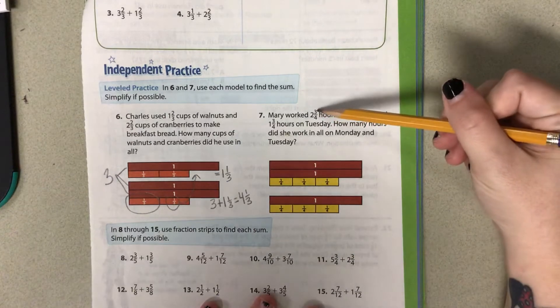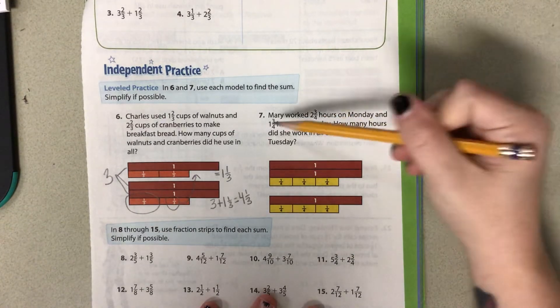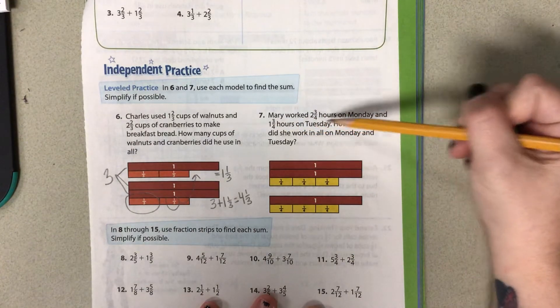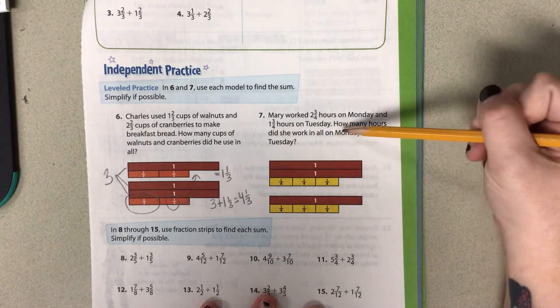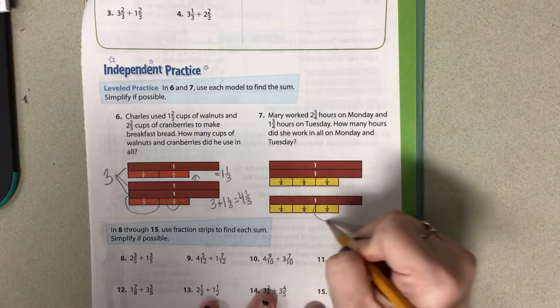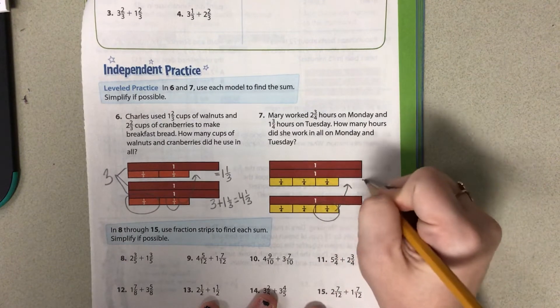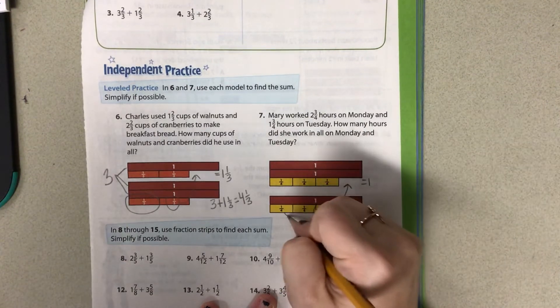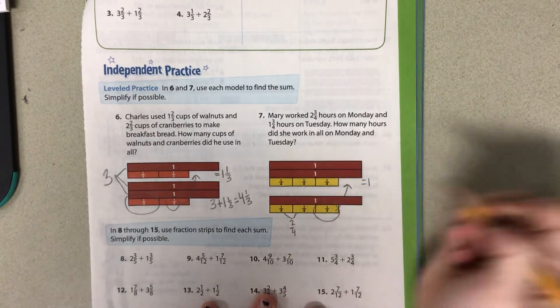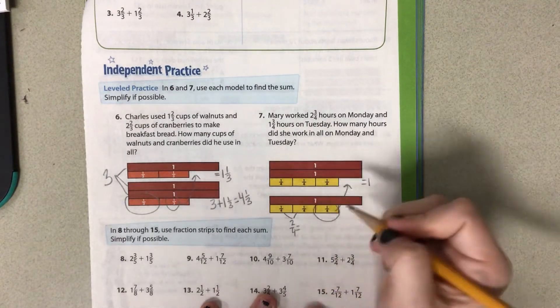Mary worked 2 and 3 fourths hours on Monday and 1 and 3 fourths hours on Tuesday. How many hours did she work in all on Monday and Tuesday? Again, I'm going to take this fraction bar and I'm going to move it up to give me a whole. Then I see that I have 2 fourths left over.